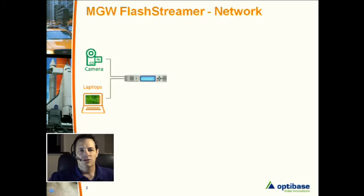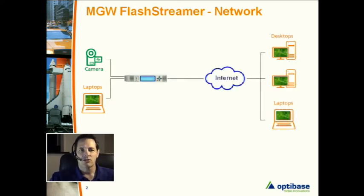Connect your video source and your laptop or desktop to the optional VGA graphics streaming. If you know your settings ahead of time or there were no changes from its last power state, the MGW FlashStreamer will save its last settings. Connected to the network and you're ready to stream live to an Adobe compatible website. You can also store directly onto the appliance for later viewing or uploading to a content delivery network.